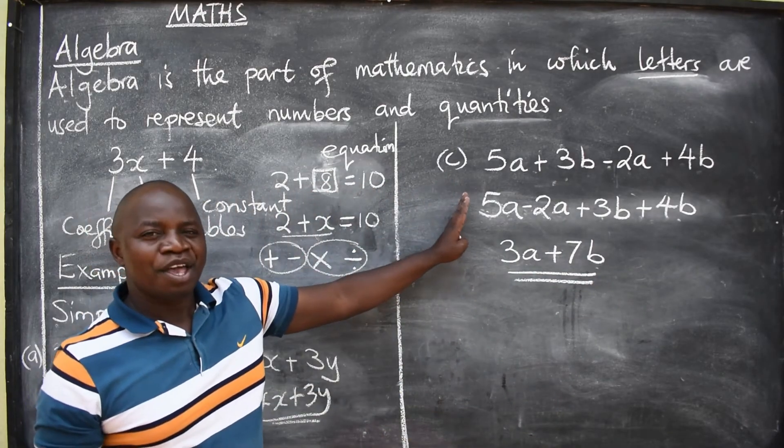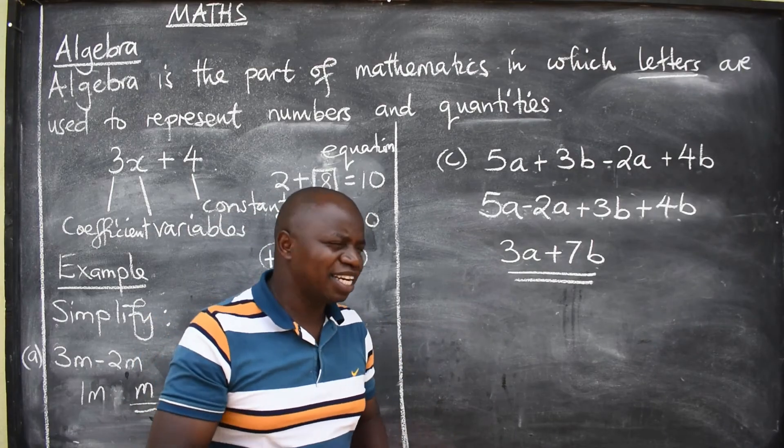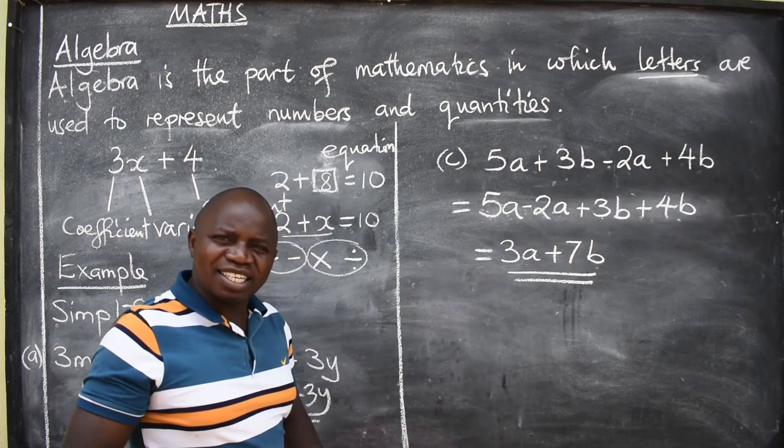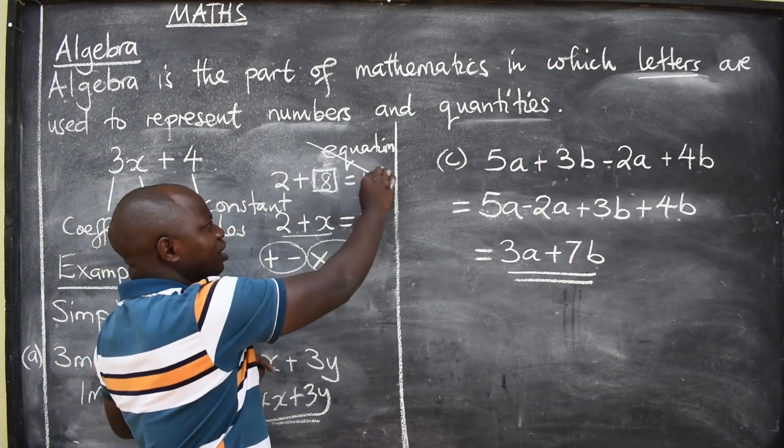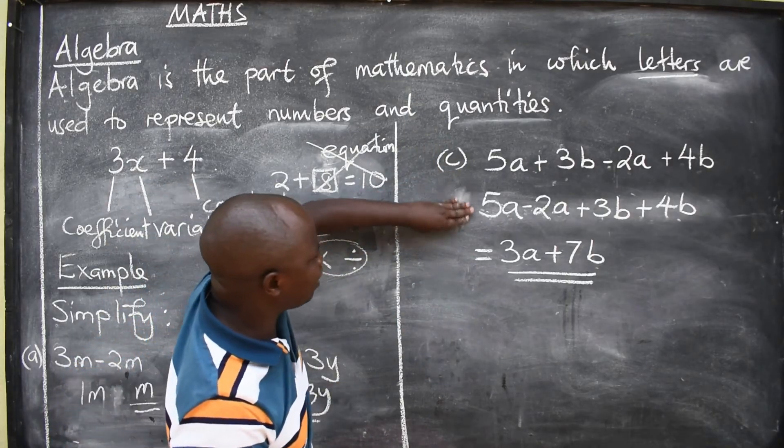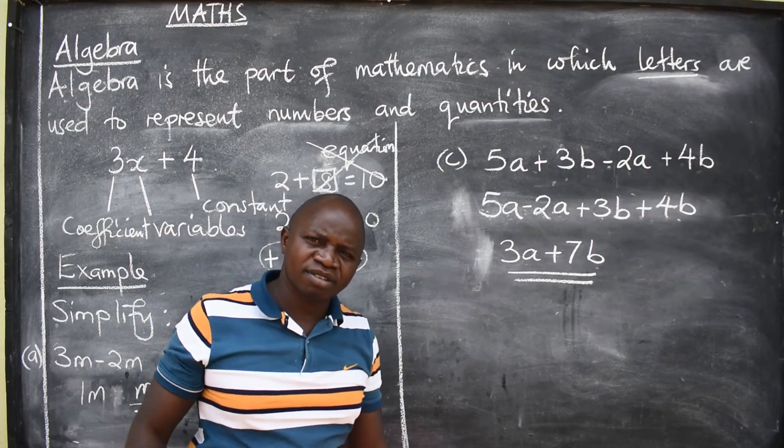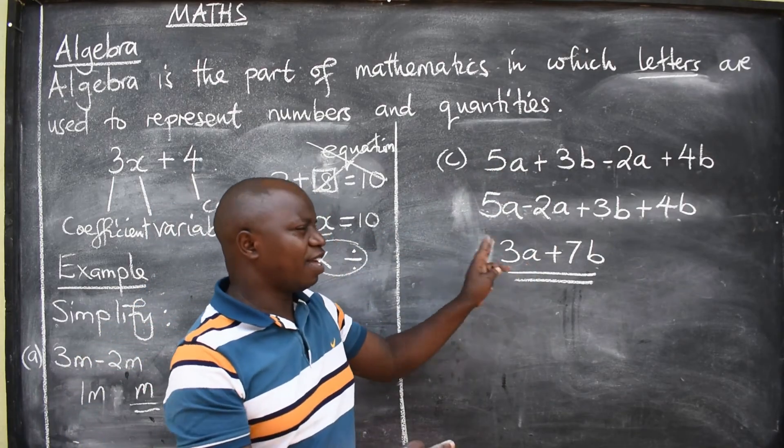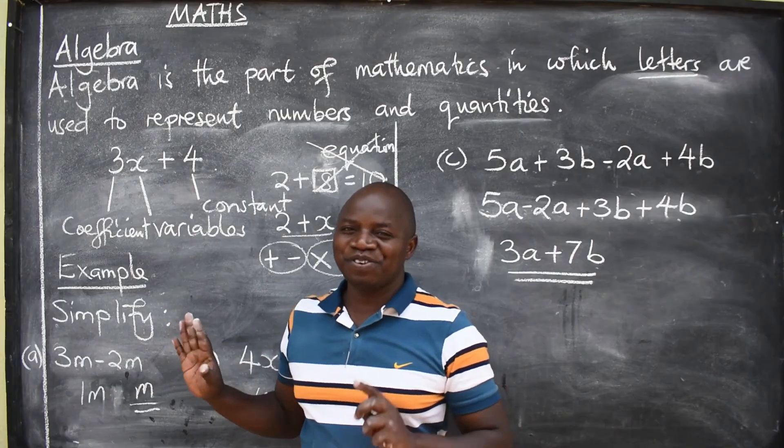Now, check out. When you are simplifying algebraic expressions, never should you be putting these equal signs. That is wrong. We are not dealing with equations here. We are not talking about equations here. These are algebraic expressions. You don't need to be putting these. It is wrong when marking. So, you just do it in that manner. In this first part, we'll be able to end here.